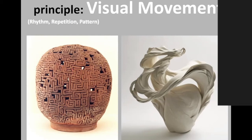Visual movement can also mean the artwork looks as though it could have been in motion at some point — almost like it's frozen in time. It doesn't mean the artwork is actually moving, just that it looks like it moves. For example, one piece looks as though it's billowing in the wind with very curvy lines that look like paper flowing all over the place. If you picked it up it would stay that way, but it has that sense of movement.